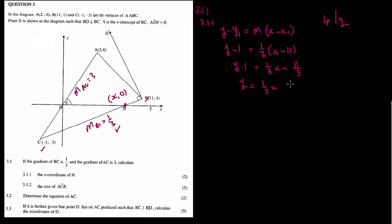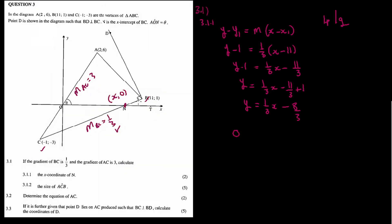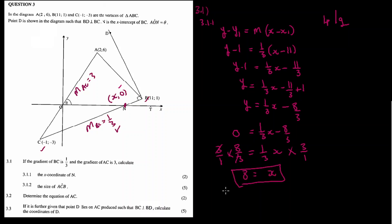So y = (1/3)x minus 11/3 plus 1. That simplifies to y = (1/3)x minus 8/3. Now substitute y = 0: 0 = (1/3)x minus 8/3. Transposing and multiplying both sides by 3, we get x = 8. So N is at (8, 0).